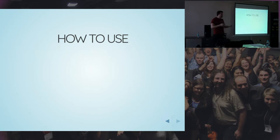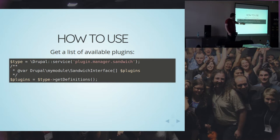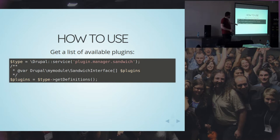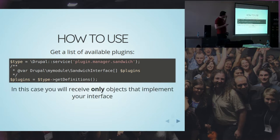Как это использовать? Плагин-менеджер мы написали. Берём из сервисов наш плагин-менеджер и вызываем getDefinitions() — и он в массиве вернёт все реализации нашего класса — просто абсолютно все, которые найдёт, которые валидны. Дальше мы уже с этими плагинами можем делать что угодно, получив только нужный интерфейс.